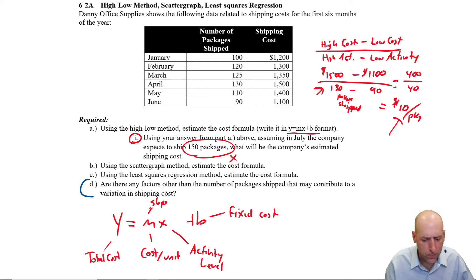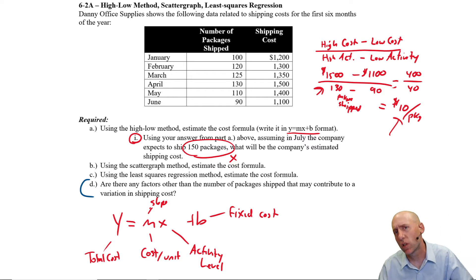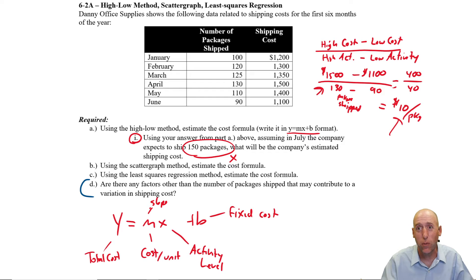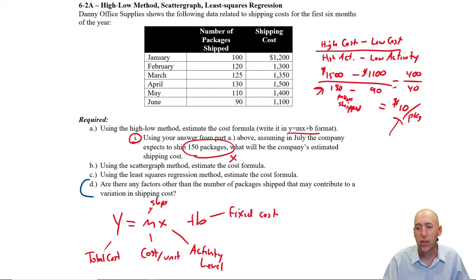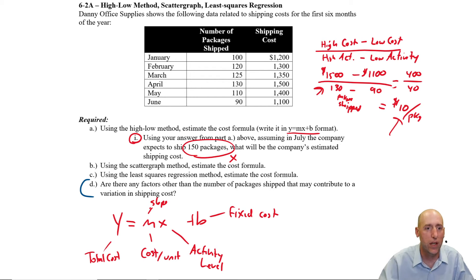Now let's look at Part D: are there any other factors besides number of packages shipped that may contribute to variation in shipping costs? Certainly — fuel costs: if fuel costs are way up, shipping costs will rise. Demand for shipping: around Christmas, shipping costs more because of the strain on the logistics system. Also, the average weight of packages — if order sizes are bigger, shipping costs will be higher.